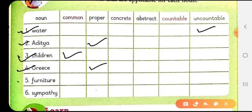Then we have the word furniture. Children, you can count these furnitures: one, two, three, four. And it is to be placed under this column of countable nouns.